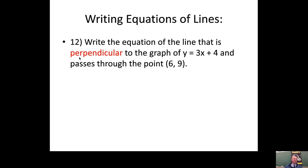This next problem is the same except one word is different — you want to write an equation of a line that's perpendicular to this line and goes through this point. There are infinitely many perpendicular lines, but only one goes through this point. The slope of this line is 3, which is 3 over 1. A perpendicular line has an opposite reciprocal slope, so you flip the fraction and change the sign — giving you -1/3 as the new slope.